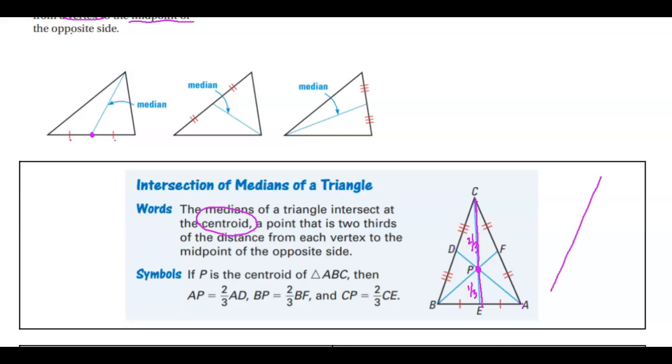So if I knew, let's say CE, let's say CE was 15, that whole length from C to E. Well, if I divide it by three, I get five, and so I'm going to double that to get the top portion, which is 10, and I just take that single value, and that's the bottom portion. So that's what two-thirds and one-third is.